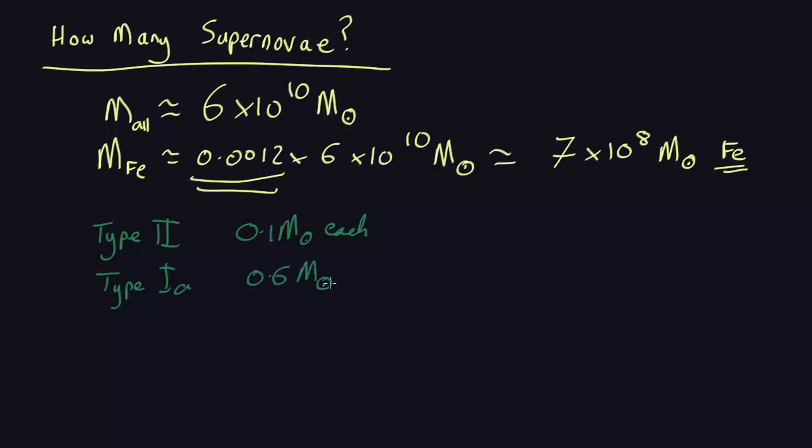So, you might think that type 1As generate 6 times more than type 2s, but it turns out the type 2s are actually more frequent. These are about 3 times more common. So, you factor that in, these ones generate 6 times more, but these ones are 3 times more common. It turns out that overall, the type 1As generate twice as much as the type 2s.